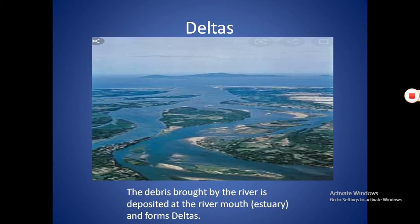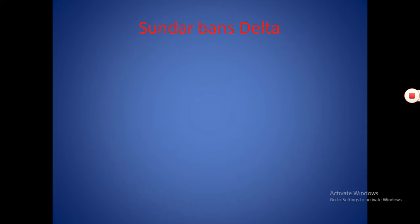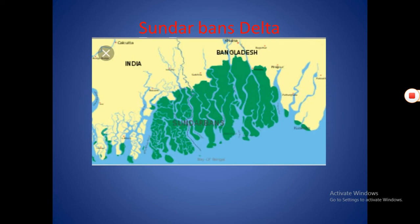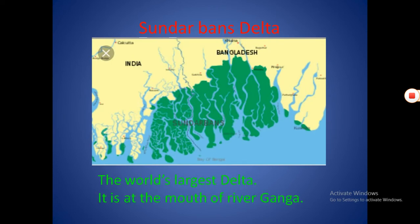This area is called a delta. It has a triangular shape. The world's largest delta, the Sundarbans, is at the mouth of the river Ganga.